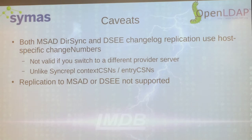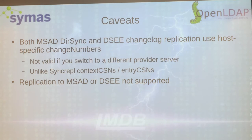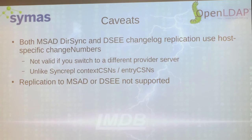There are obviously going to be a lot of caveats. In both cases — Microsoft and DSCE — their replication tracking systems are based on just simple integer numbers. These change numbers are only valid within the context of a single provider server. So if you have failover or fallback configurations, the state you've saved — the change number — isn't valid on a different server. This is unlike OpenLDAP where context CSNs are portable to every provider. Basically, both of these replication protocols are poor. You should use them as little as possible. The use case here is: you migrate data off the existing server as fast as you can and then you walk away from it.